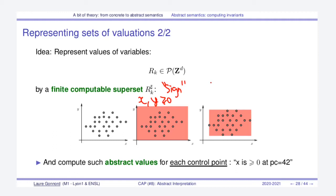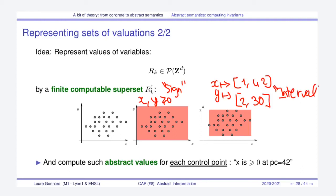The idea is to represent this set of valuations by a finite superset, depicted here in red, which is bigger and always contains all the valuations we want to represent, but is easier to represent. For instance, the red set depicts all x and y that are positive — this is called the sign domain. Here we represent the set of valuations by a map from each variable to a given interval; for example, x is between 1 and 42, and y is between 2 and 30 — this is called the interval domain.